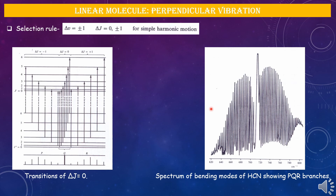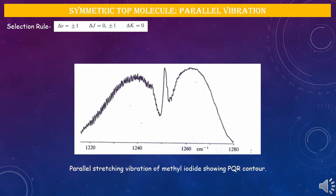Now we discuss the parallel and perpendicular effects on vibrational modes for a symmetric top molecule. For a symmetric top, two rotational quantum numbers are involved: J and K. For parallel vibration, the selection rule is Δv = ±1, ΔJ = 0, ±1, and ΔK = 0. Since ΔK = 0, K is identical in the upper and lower states, so spectral frequencies are independent of K. The spectrum contains P, Q, R branches with spacing 2B in P and R branches and a strong Q branch.